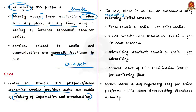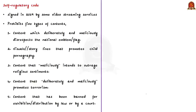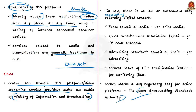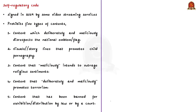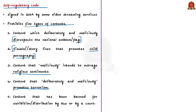Earlier, the government asked OTT platforms to come up with a self-regulatory body similar to the News Broadcasting Standards Authority — an independent body set up by the News Broadcasters Association to consider and adjudicate complaints about news broadcasts. As a result, in 2019, some video streaming services signed a self-regulatory code providing guiding principles for content. This code prohibited five types of content: content that deliberately disrespects the national emblem or flag; visuals promoting child pornography; content that maliciously intends to outrage religious sentiments; content that deliberately promotes terrorism; and content banned by law or by a court.